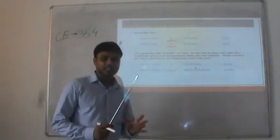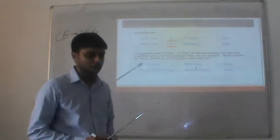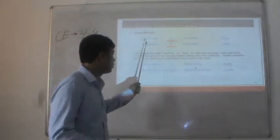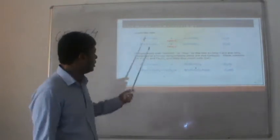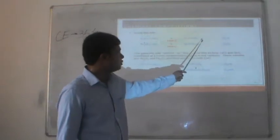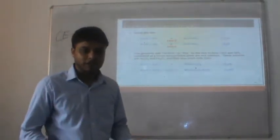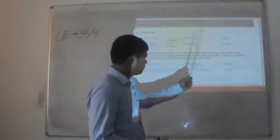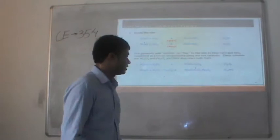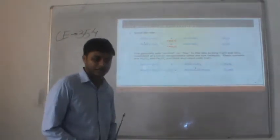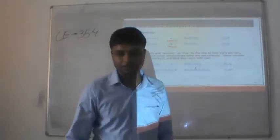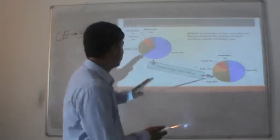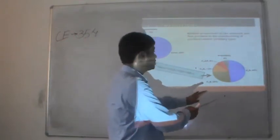At 1300 degrees Celsius, the calcium oxide from calcareous materials and silicon oxide from argillaceous materials are fused together. Three molecules of calcium oxide and one molecule of silicon oxide fuse at high temperature to form C3S. Likewise, C3A and C4AF — tricalcium aluminate and tetracalcium aluminoferrite — are also formed.